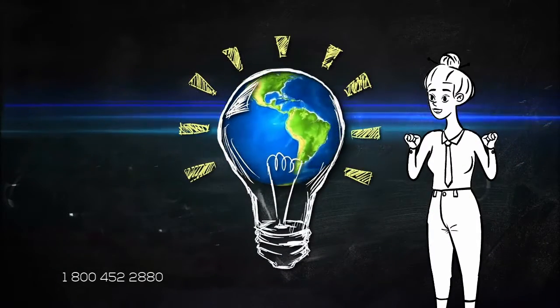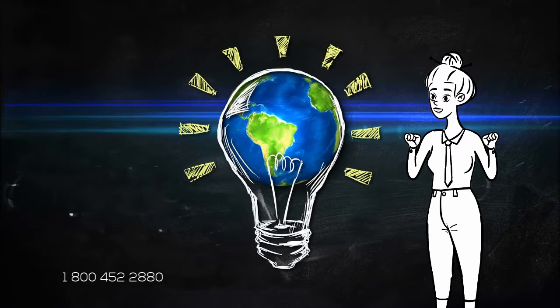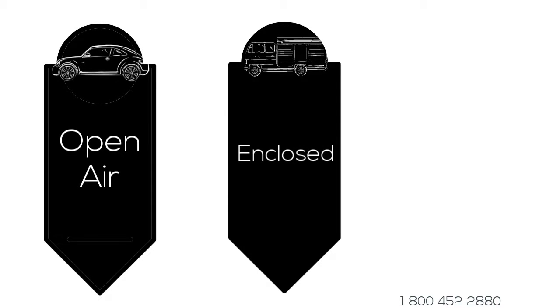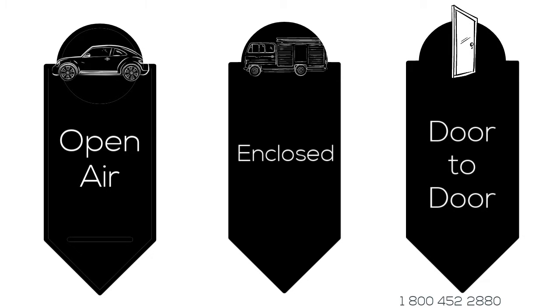We offer different types of shipping services that will fit any budget. Open air, the fastest and cheapest way to transport your vehicle. Enclosed, a little more time to deliver, but protection from all the elements. Door to door, a way to deliver your vehicle right to your doorstep.